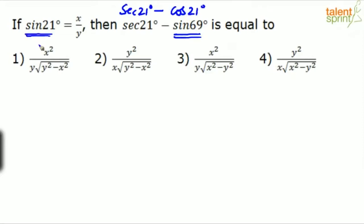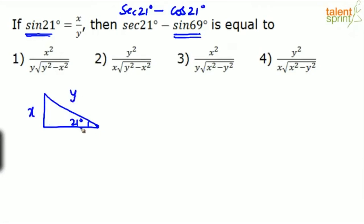So sine θ is given as x/y and we need to find secant θ minus cos θ. Using the right-angled triangle concept, with the angle at 21 degrees, sine θ is opposite by hypotenuse, so the opposite side is x and the hypotenuse is y. Applying the Pythagorean theorem, you can find the missing side, and once you have all three sides you can proceed.